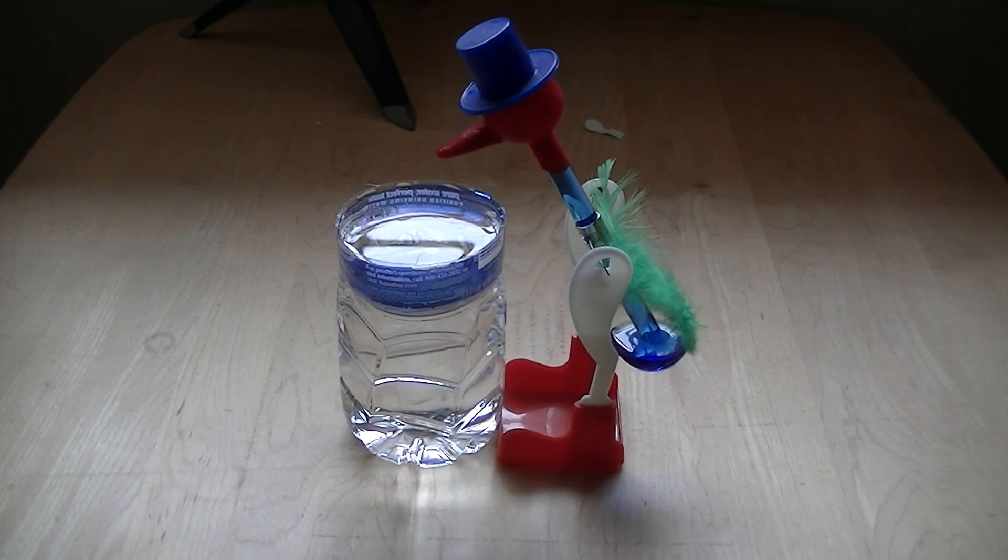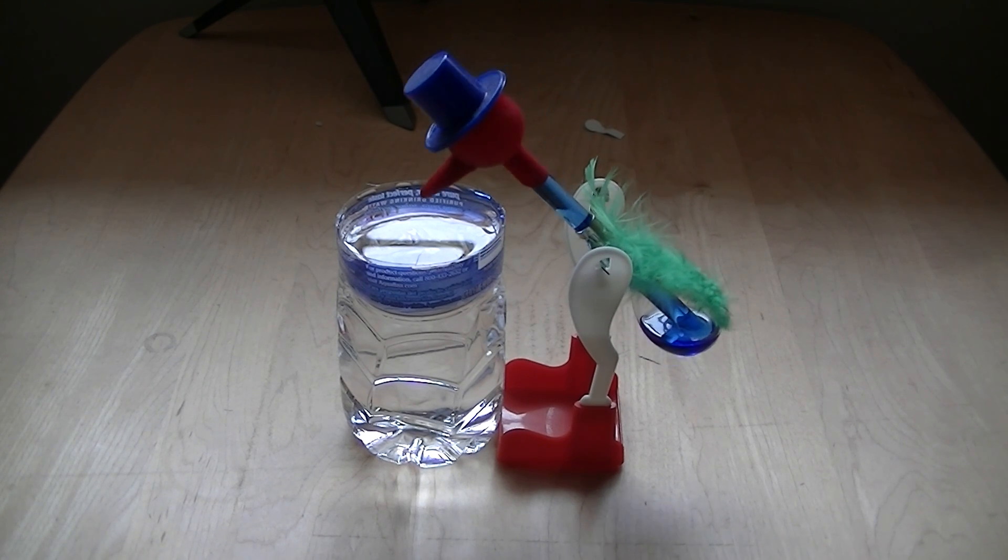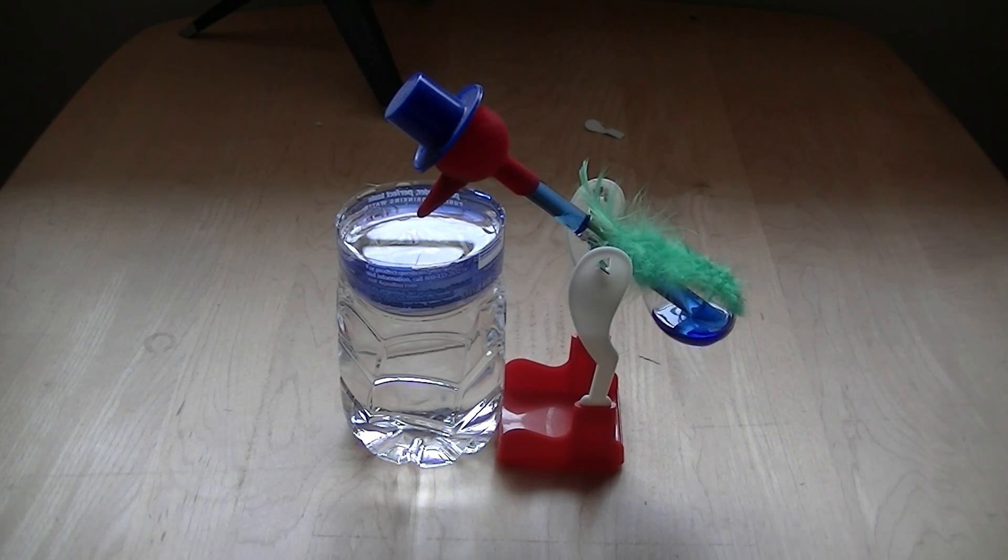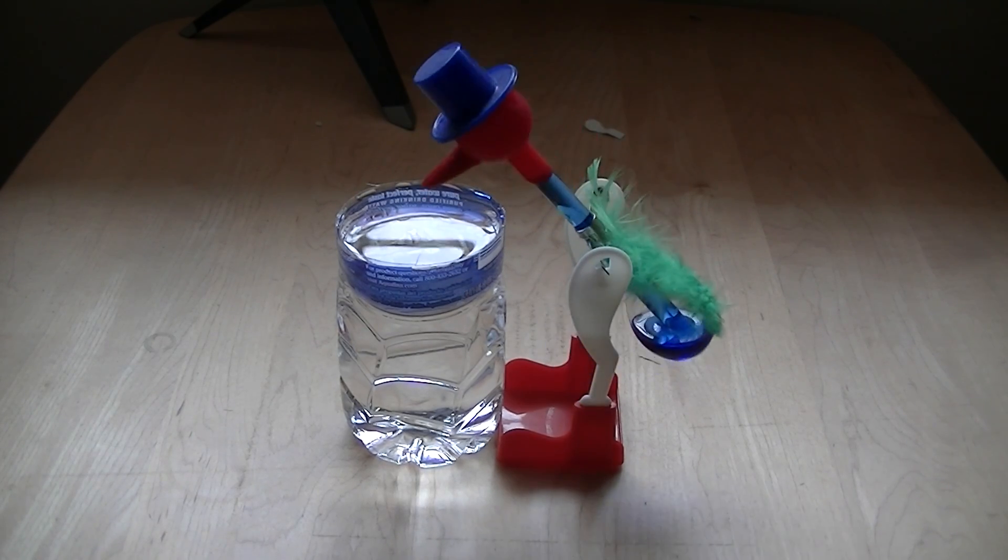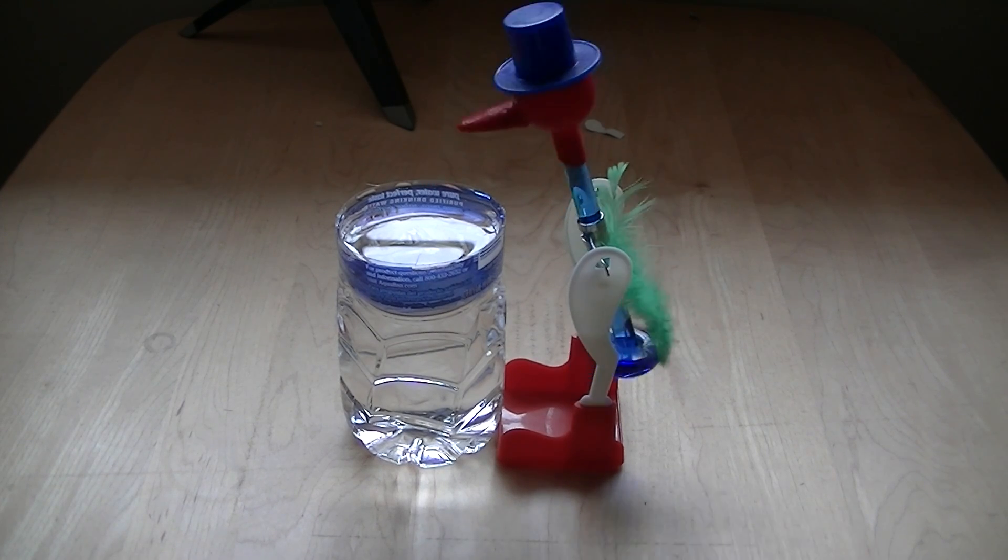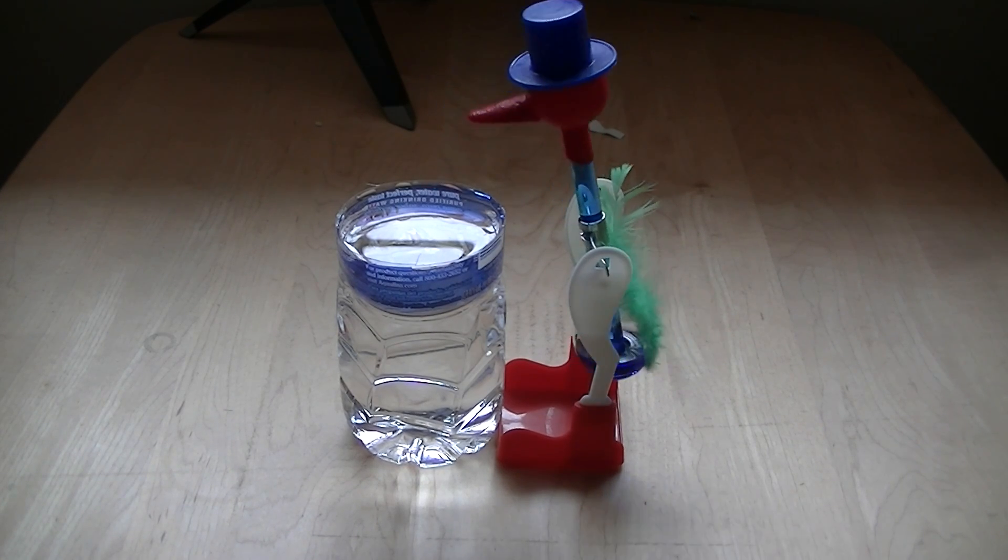So the water evaporates from the felt on the head, evaporation lowers the temperature of the glass head, heat of evaporation. The temperature drop causes some of the dichloromethane vapor in the head to condense, which is the liquid inside, and the lower temperature and condensation together causes the pressure to drop in the head, which is part of the ideal gas law.